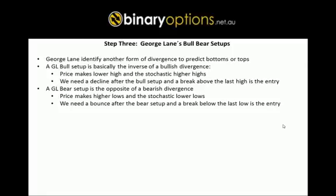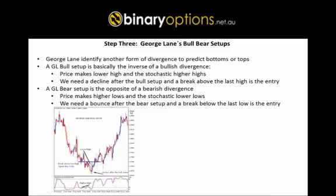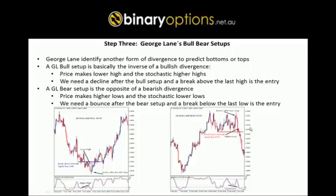Here is a George Lane bull setup example. On a down move, price makes lower highs but the stochastic is making higher highs. After the bull setup — lower highs in price and higher highs in the stochastic — we have a decline in price, and when we take out the previous high we have a signal to buy calls. For the George Lane bear setup, the stochastic is making lower lows but price is making higher lows. After the bear setup we have a bounce to the upside before breaking below this low, giving us a signal to buy puts.